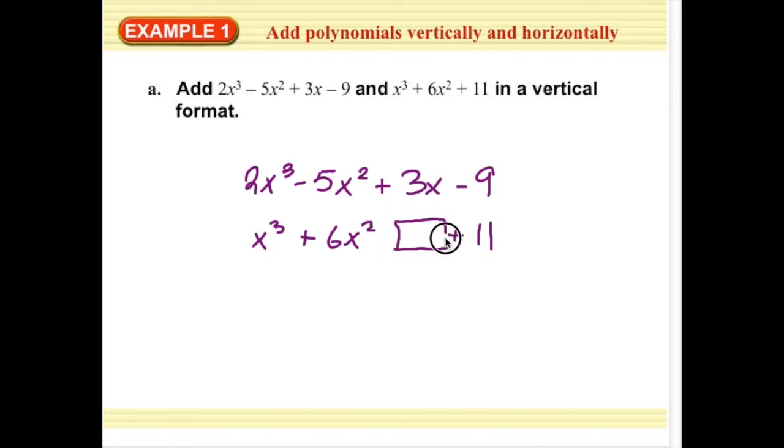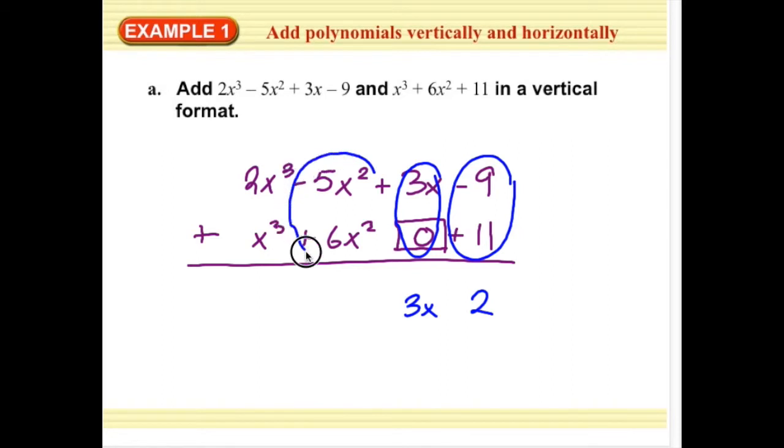So I'm going to leave that space blank. You can also fill it in with a 0 if you wanted to, just to help you arrange those terms. Because what we're going to do is add these two polynomials in a vertical format. Now this is as simple as combining like terms when you're viewing your function. So, negative 9 and positive 11 is the same as 2, 3x and 0 is 3x, negative 5x squared and positive 6x squared is x squared,